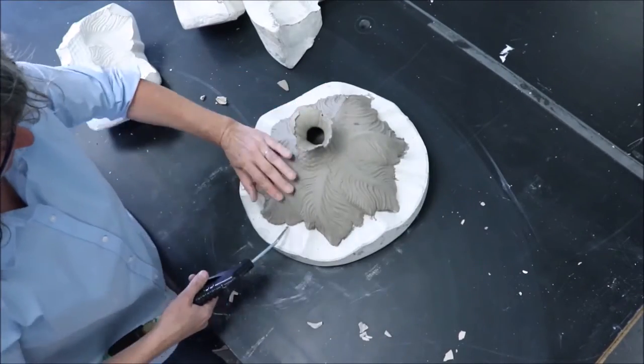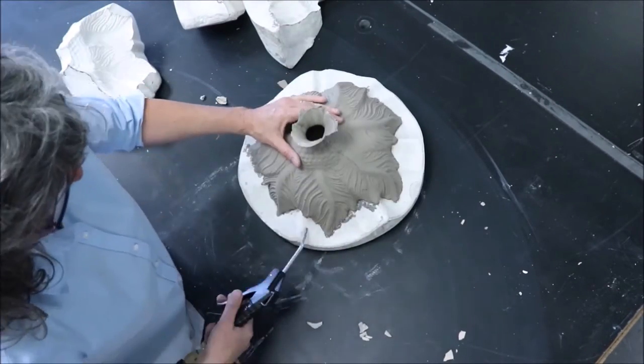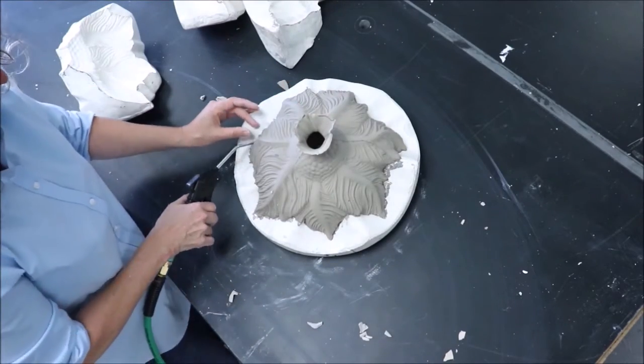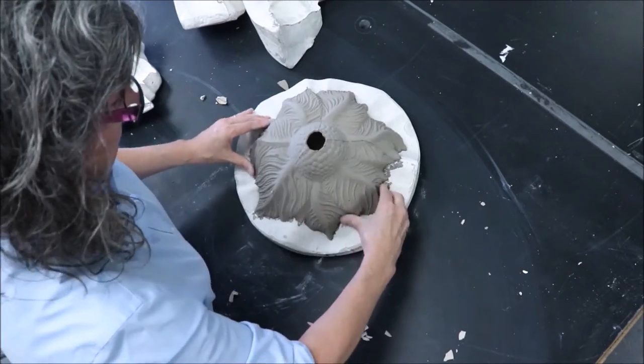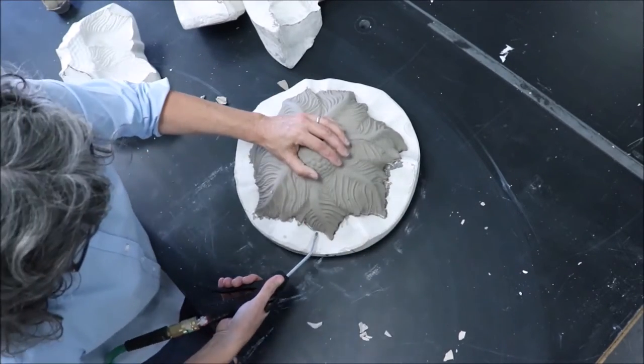However, the top of the flower is very difficult to release from the mold. This is because of the shape of the mold. Because clay shrinks as it dries, the clay flower actually grabs and tightens to this convex portion of the mold.